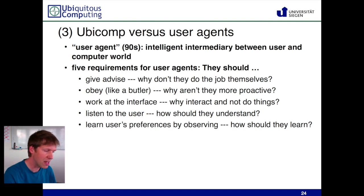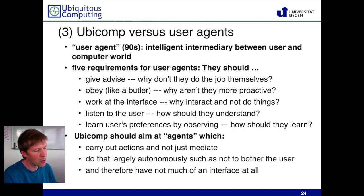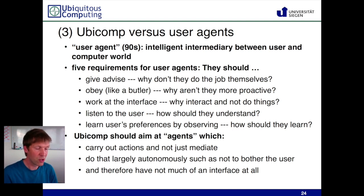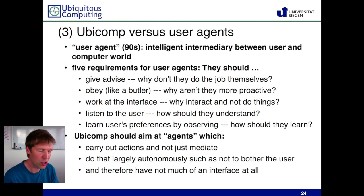He also noted that agents need to learn users' preferences by observing, but how does this learning work? Lots of advances have been made, and people do bring in the learning of user preferences nowadays, but there are still lots of things that need to be fixed. As an alternative, Mark Weiser proposed that we do work with agents, but they should not be user agents as understood at the time. They would carry out actions autonomously, not constantly mediate and pop up in front of you. They should largely not bother the user, and therefore should not have much of an interface at all.